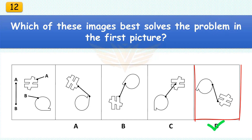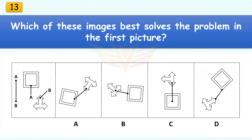Which of these images best solves the problem in the first picture? The correct answer is D. Move the speech bubble up and rotate it 135 degrees, then rotate the not equal sign more than 180 degrees.